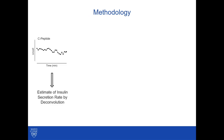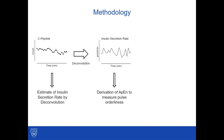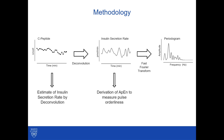We used peripheral C-peptide concentrations to deconvolute insulin secretion rates in each individual. We subsequently applied approximate entropy to measure pulse orderliness, and then we used a fast Fourier transform of the insulin secretion rate to construct a periodogram of all the different pulses in each given individual and their contribution to overall amplitude of insulin secretion. This allowed us to derive a pulse interval and the frequency distribution.